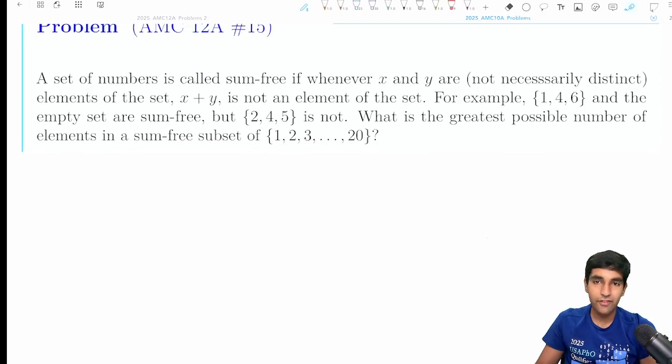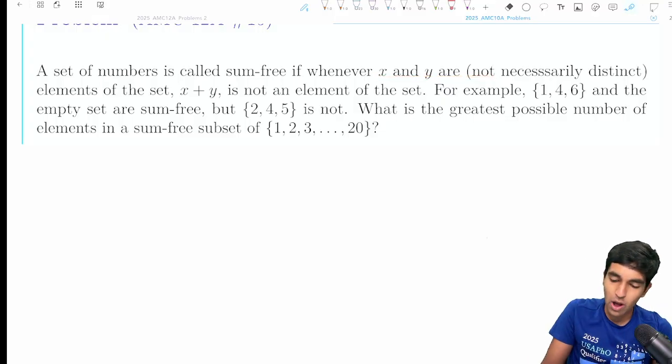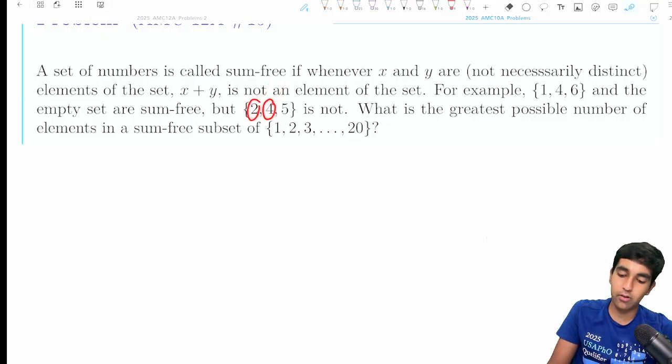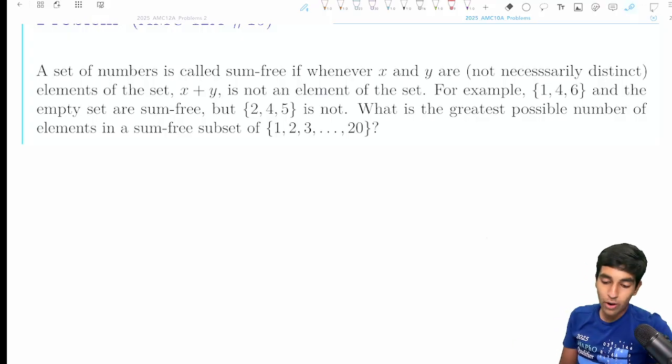Let's tackle number 15 on the 12, also one of the latest problems on the 10. We have a set of numbers that's sum-free whenever x and y are - they don't have to even be distinct - they can't sum to another element. For that reason we also can't have doubles. If a exists, we can't have 2a in our set. What's the greatest number of elements in a sum-free subset?